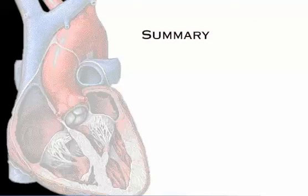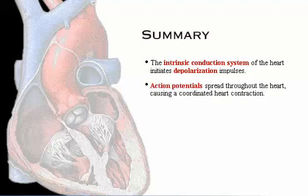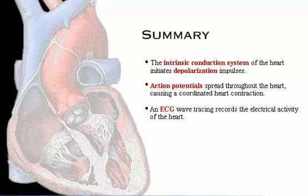Here is a summary of what we've covered: the intrinsic conduction system initiates depolarization impulses; depolarization spreads throughout the heart causing a coordinated heart contraction; and an ECG wave tracing records the electrical activity of the heart. To test your knowledge, click the quiz button to go to the self-quiz.